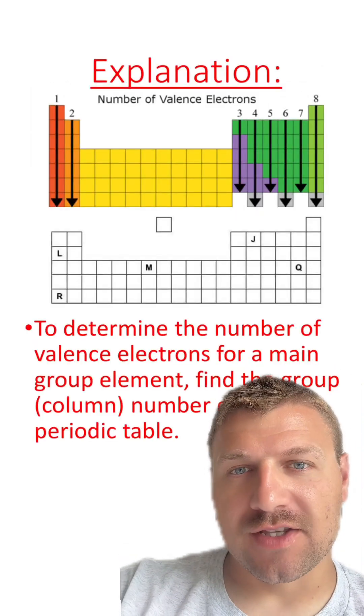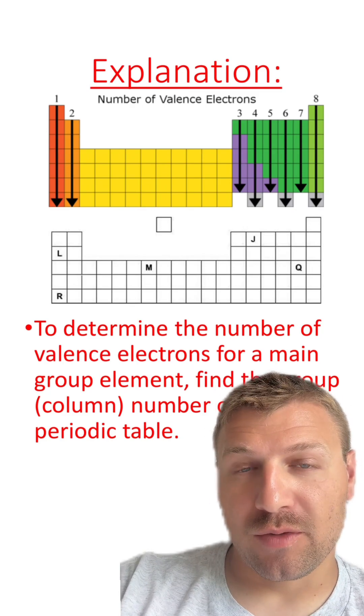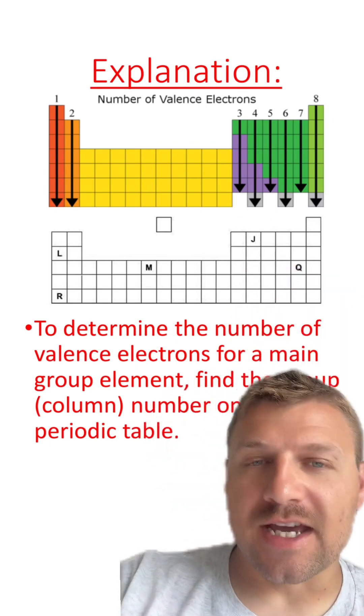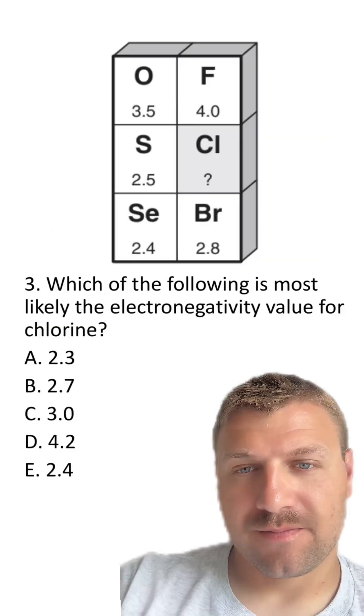To determine the number of valence electrons, we typically look at the columns or groups on the periodic table. And since element J is in this fourth column, as you can see here, it has four electrons in its outer shell, or four valence electrons.